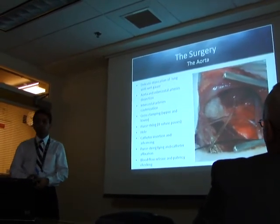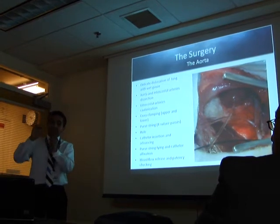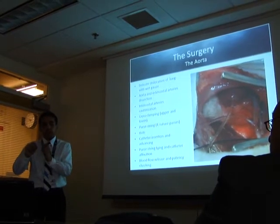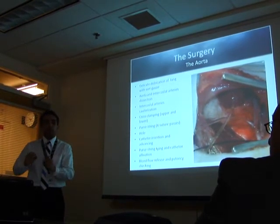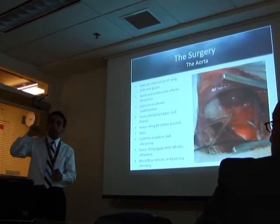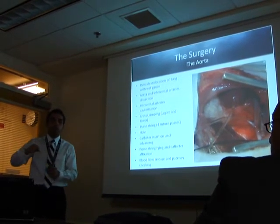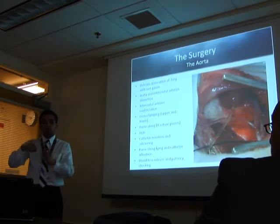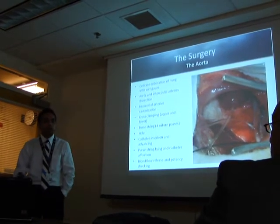Then we go for the aorta. First we dislocate the lung a little and dissect the intercostal arteries, then cauterize these pairs of intercostal arteries. We apply cross-clamps above and below before doing the purse string — since we are making holes — and then make the purse-string square again. In the middle of this square we poke a hole, insert the catheter past the lower cross-clamp, tie the purse string to prevent blood loss, loop around the catheter, tie it, and it is fixed to the artery. Then we check patency and we are ready to go.